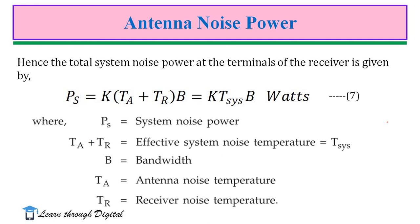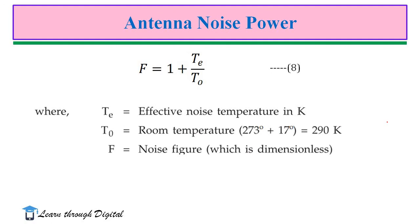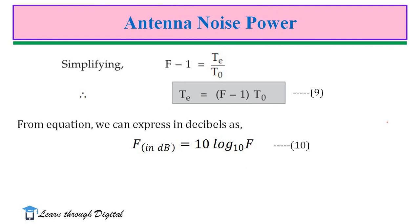The total noise power at the terminals of the receiver is given by the system noise power Ps = K(TA + TR)B, where TA + TR is replaced by Tsys, the effective system noise temperature, and TR is the receiver noise temperature. The noise figure F is equal to 1 + T/T₀, where T is the effective noise temperature in Kelvin and T₀ is the room temperature. After simplifying, we get effective temperature T = (F − 1)·T₀. The noise figure in decibels is equal to 10·log₁₀(F).